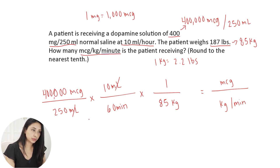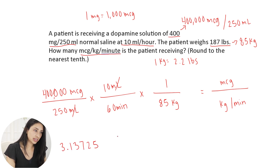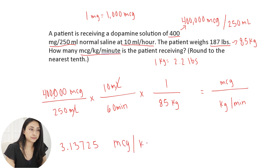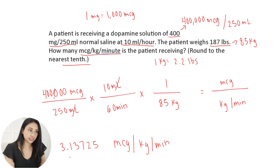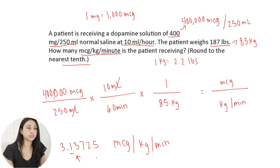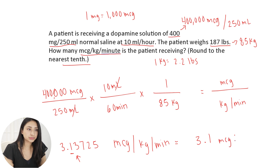That gives me 3.13725. The question says to round to the nearest tenth. The digit in the tenths place is 1, and the number directly to the right is 3, so I round down. My final answer is 3.1 micrograms per kilogram per minute.